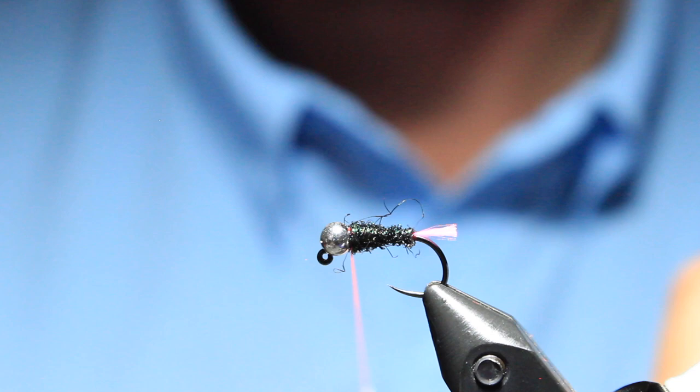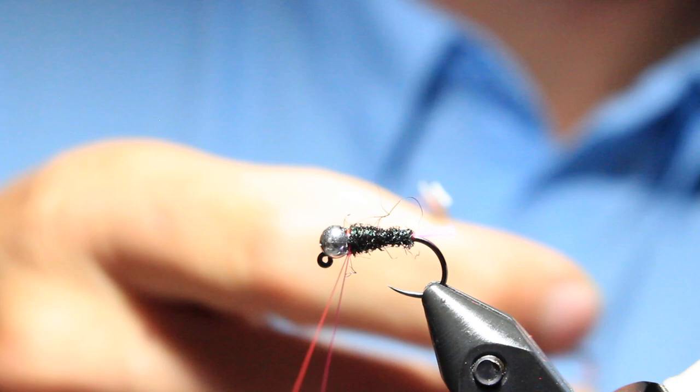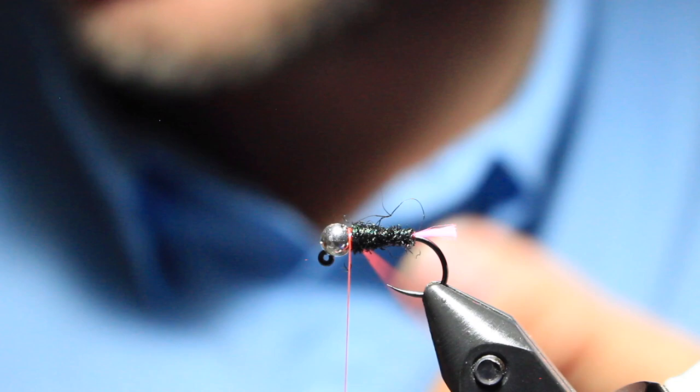So, what we are going to focus on is a dubbing loop. So, got your thread hanging down. Pull your finger back towards yourself. Keep that tension. And wrap towards yourself with the bobbin. And then you're going to come under the dubbing loop. And back up over. And so now you see I have a loop. And so this is what we're going to do for the collar.